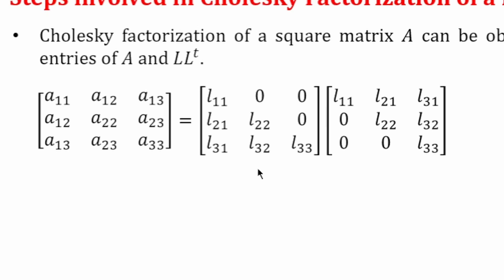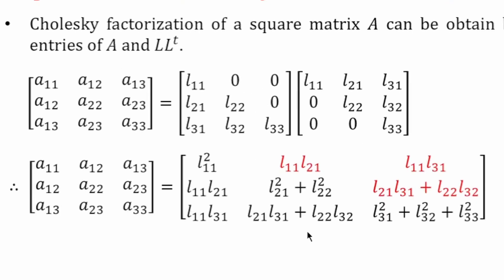Also, L is a lower triangular matrix. Therefore, its upper triangular entries are zeros. This is L-transpose; therefore, the first column of L becomes the first row of L-transpose, the second column of L becomes the second row of L-transpose, and the third column becomes the third row of L-transpose. Next we find the product of L and L-transpose. We see it is a symmetric matrix — the second row first element is the same as the first row second element, and similarly for the other off-diagonal pairs.